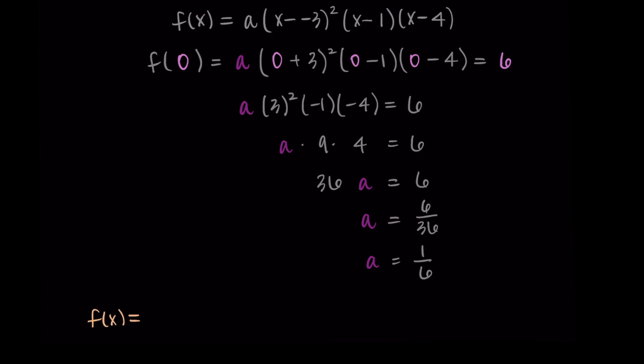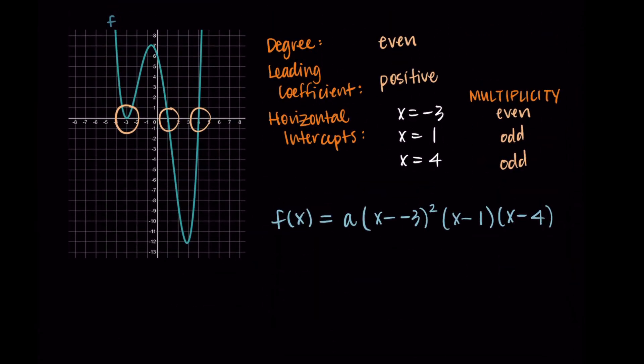So we say we have f of x equals one sixth times x plus three squared times x minus one times x minus four. I like to just do a little check at the end to make sure this satisfies what we thought should happen.